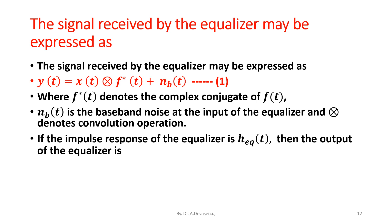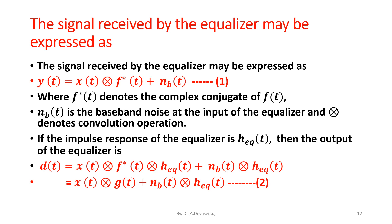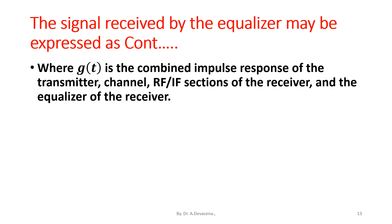The impulse response of the equalizer is h_eq(t). Then, the output of the equalizer is d(t) = x(t) ⊗ f*(t) ⊗ h_eq(t) + n_b(t) ⊗ h_eq(t). That is equal to x(t) ⊗ g(t) + n_b(t) ⊗ h_eq(t). Consider this as equation 2 where g(t) is the combined impulse response of the transmitter, channel, RF IF sections of the receiver and the equalizer of the receiver.